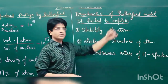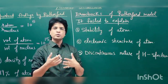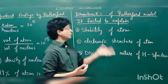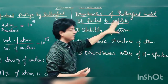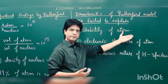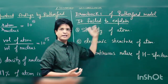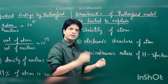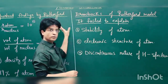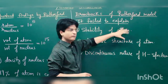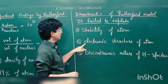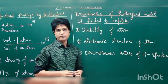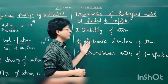Now let's see the drawbacks of the Rutherford model. Every model has to pass certain experiments and withstand other theories. Rutherford's model failed to explain, first of all, the stability of the atom. According to Maxwell's electromagnetic theory, if an electron accelerates it will fall slowly into the nucleus. Rutherford was also not able to explain the electronic structure of atom — how electrons are distributed in different shells.